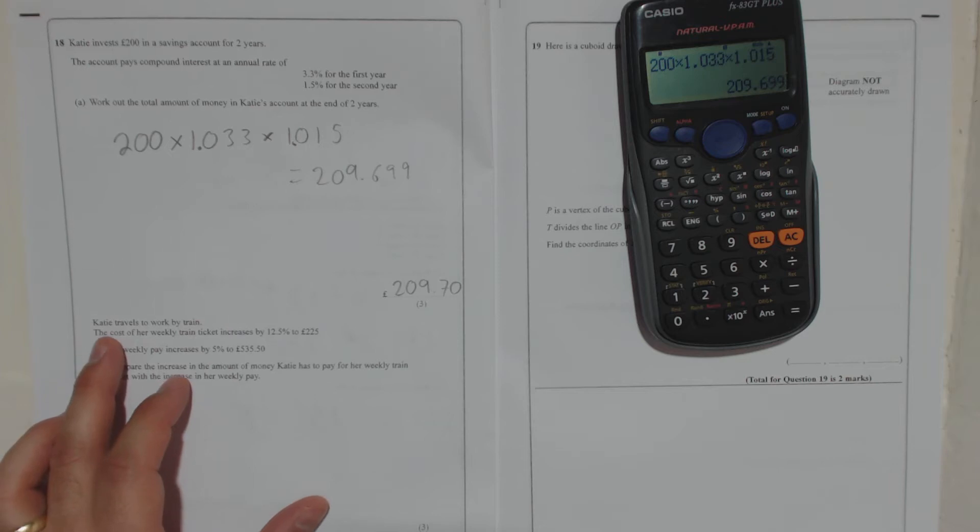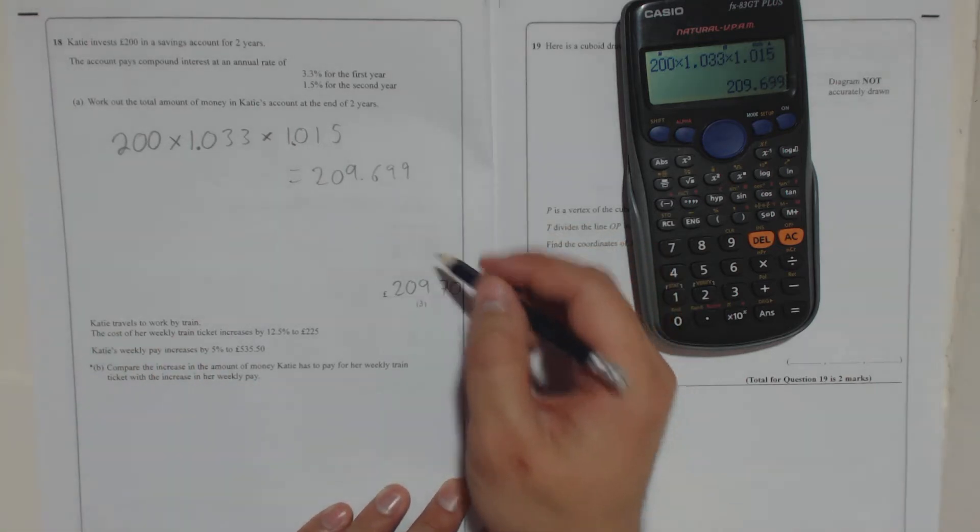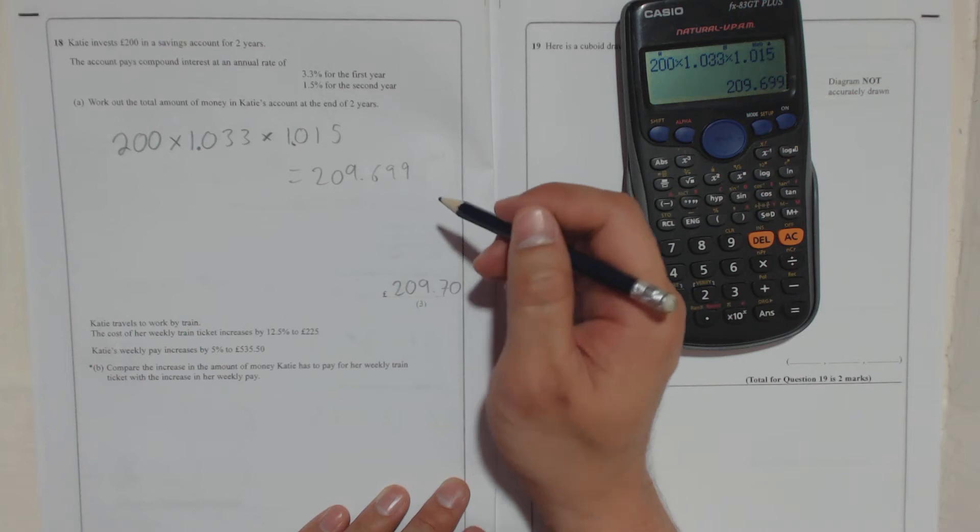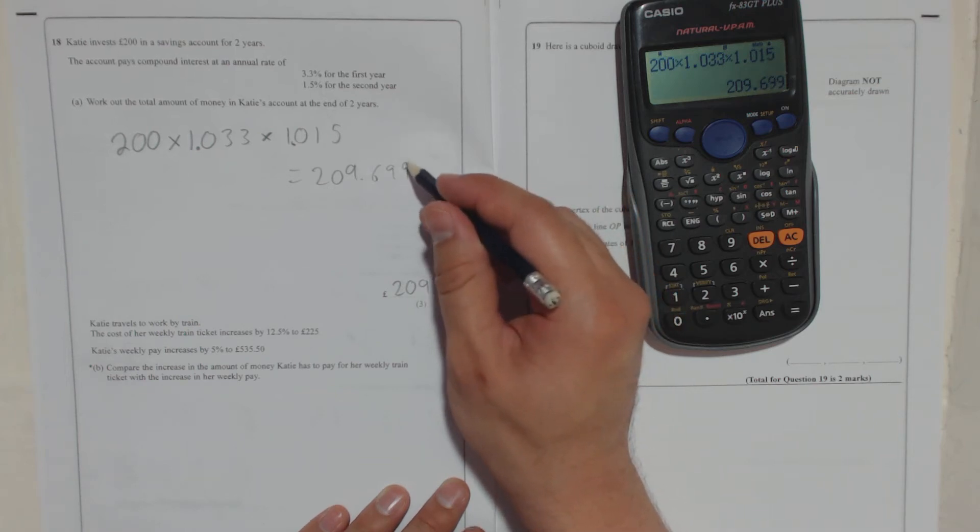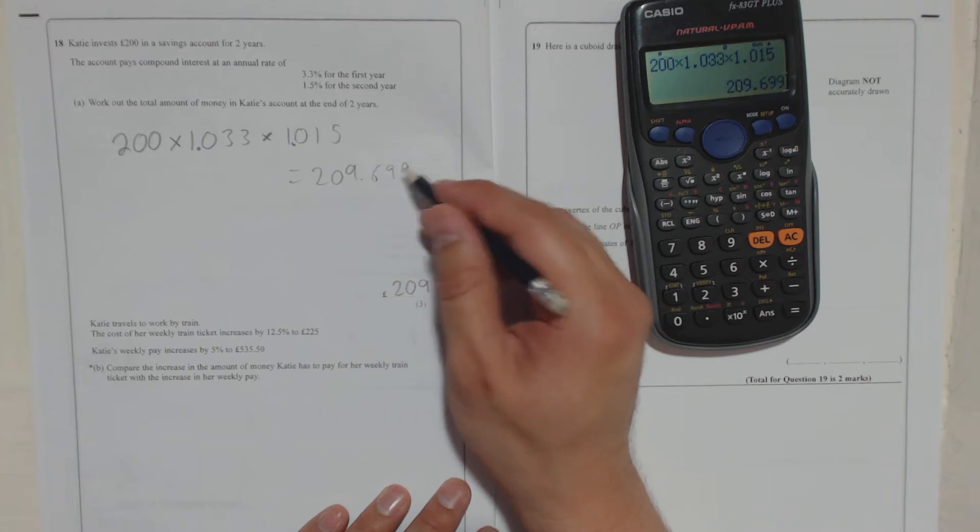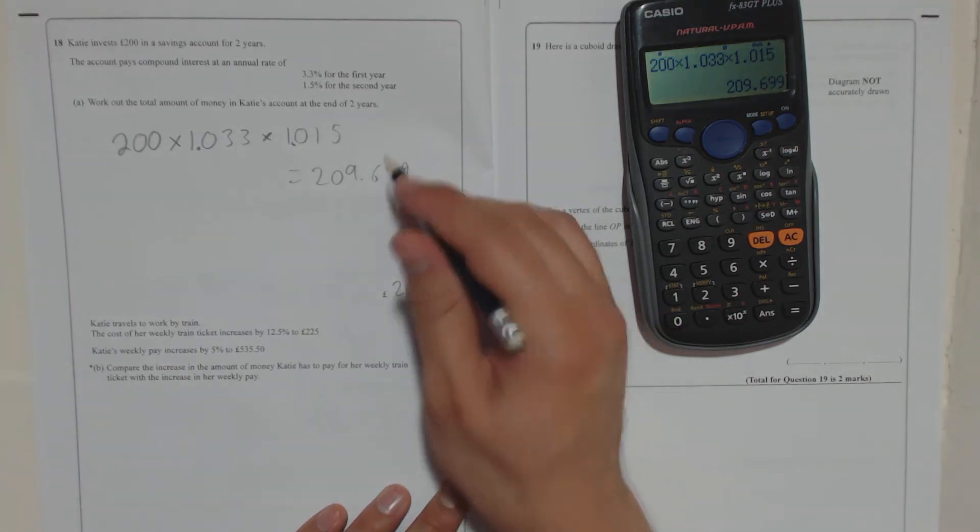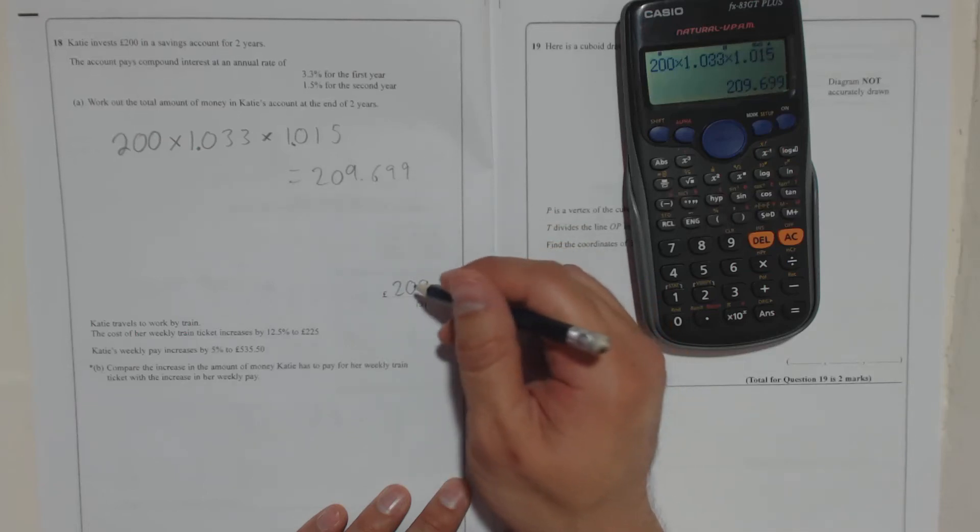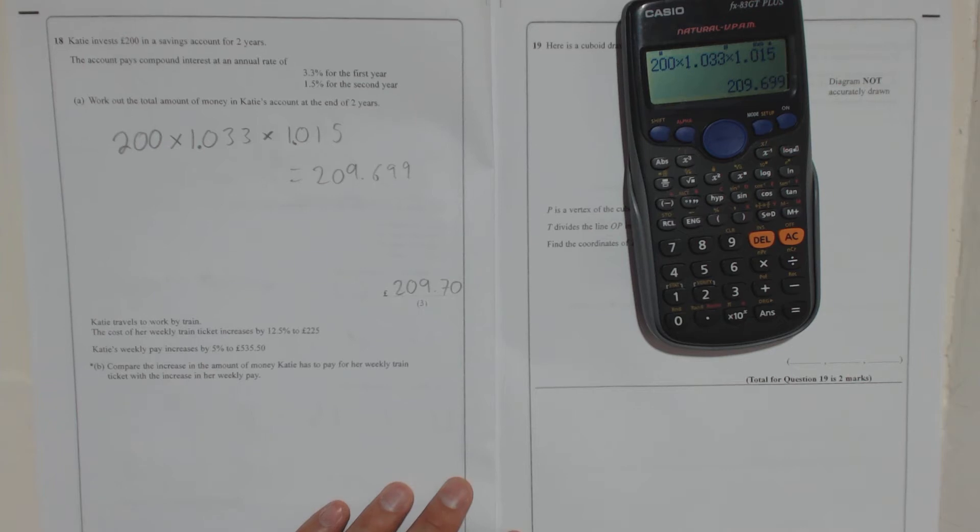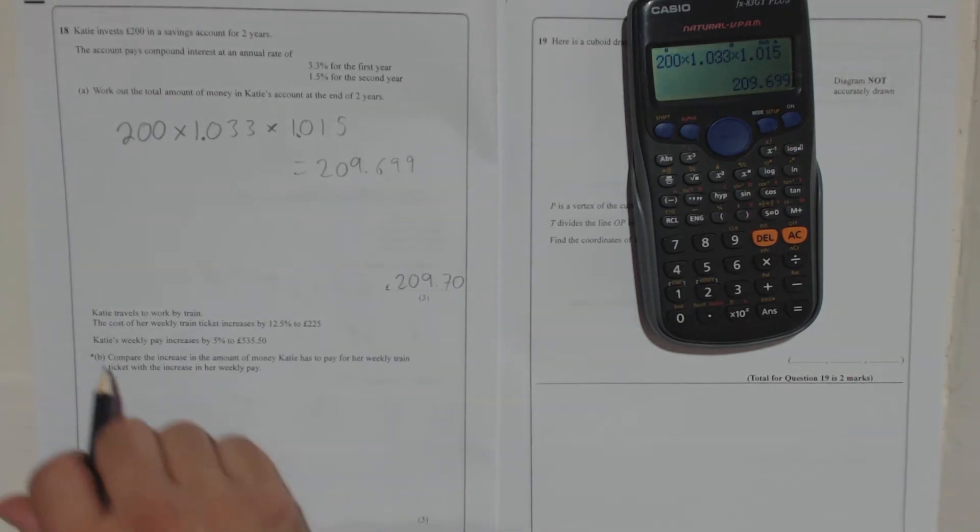B. Katie travels to work by, oh, before I carry on, I should add that because it's money, you could argue that the bank, if you don't reach the 70p, they won't give you the 70p, they'll give you 69. Or you could argue that you should round up to the nearest, which is what I did. Either of one of those answers, either 209.70 or 209.69, either of those would be marked correct by the marker.